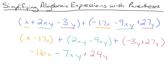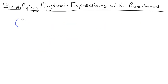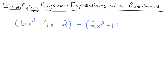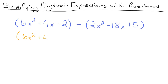Before we go I want to try one more example that's slightly more difficult: 6x squared plus 4x minus 2, minus 2x squared minus 18x plus 5. Notice that this expression has a minus sign between the two sets of parentheses. Remember how subtracting is the same thing as adding a negative? So let's rewrite this as 6x squared plus 4x minus 2, plus negative 1 times 2x squared minus 18x plus 5.